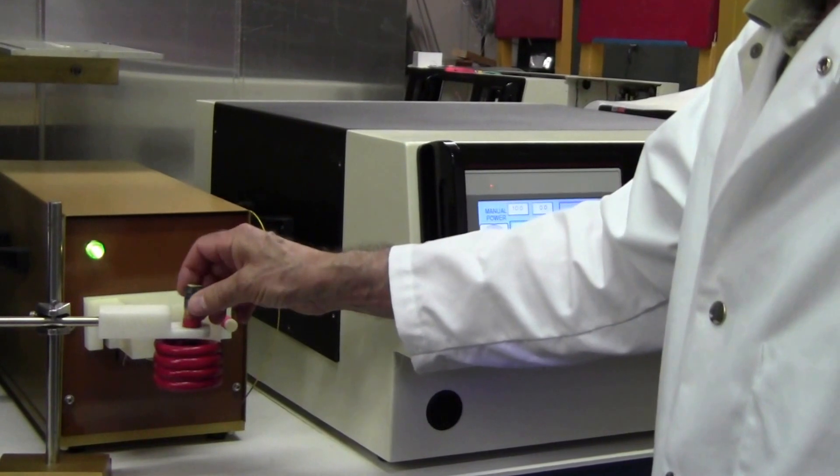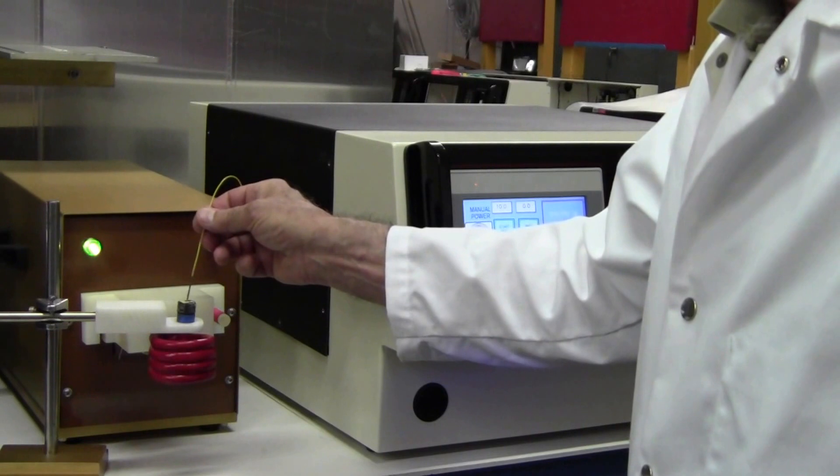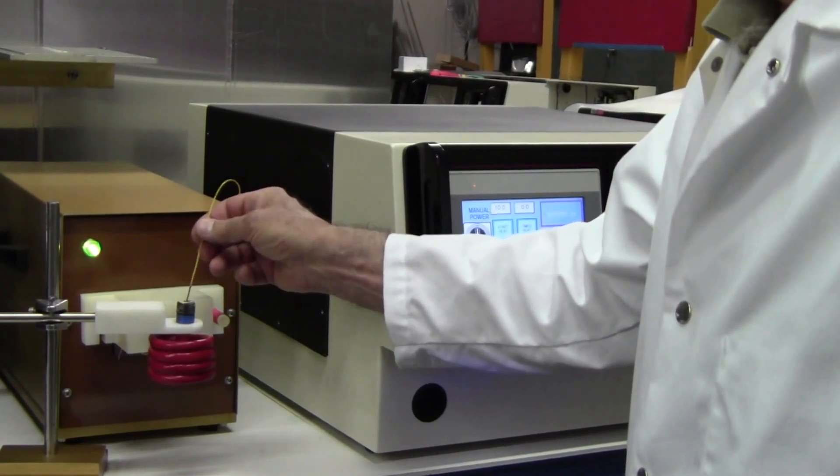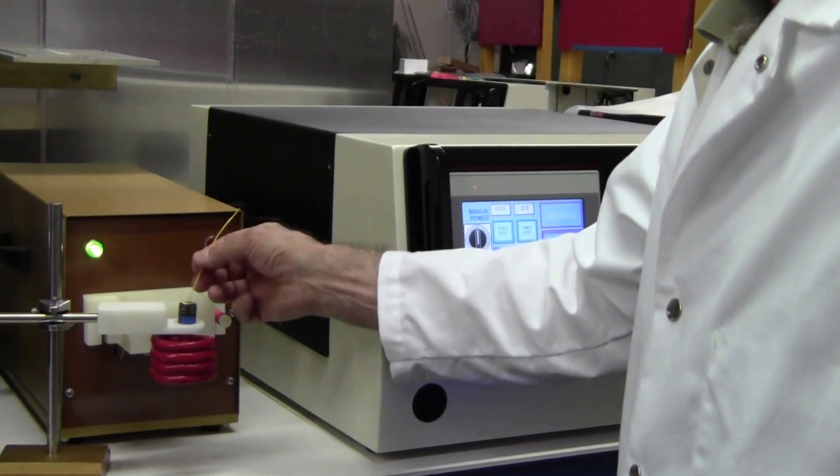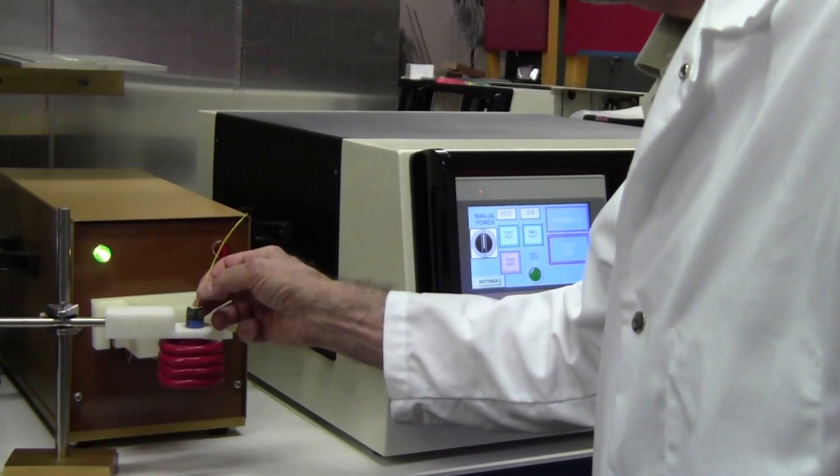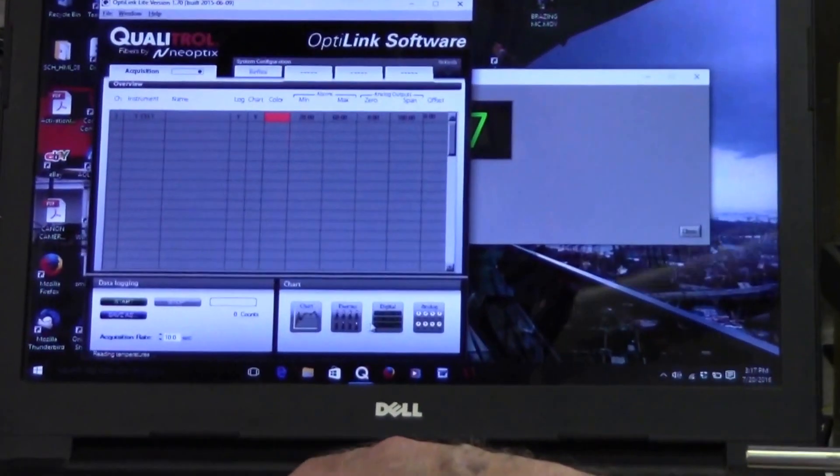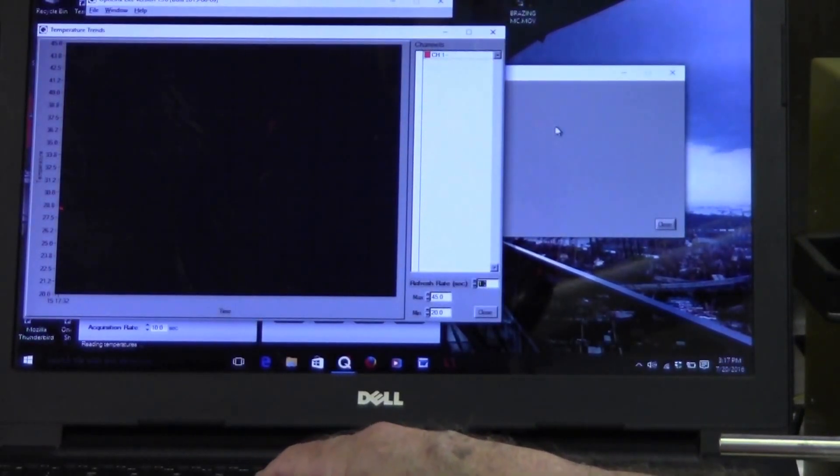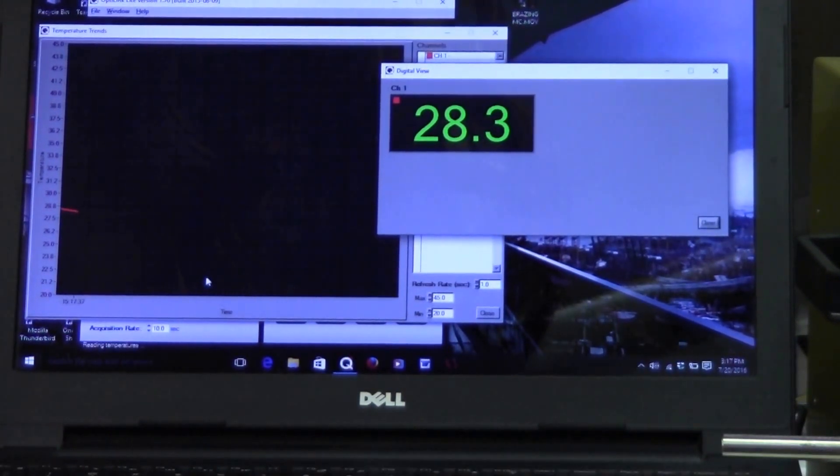I'll cool off the sample a little bit. I'm going to put the fiber optic cable back in the test tube. I'm going to reset the display. There we go. Okay, now we have a digital readout.